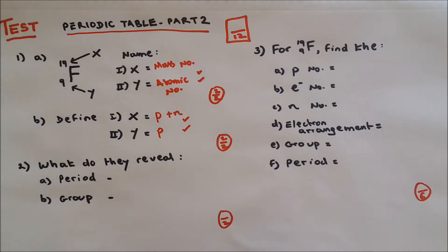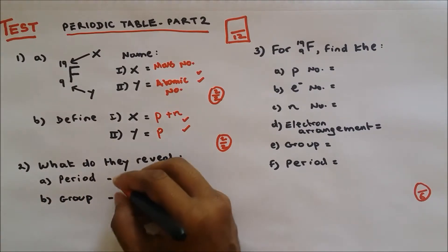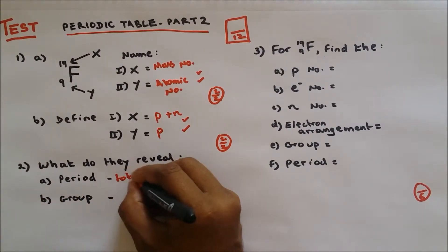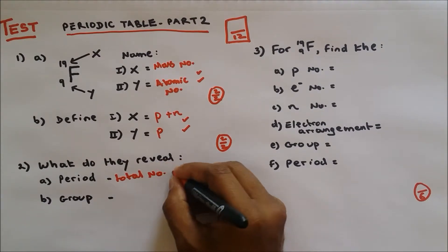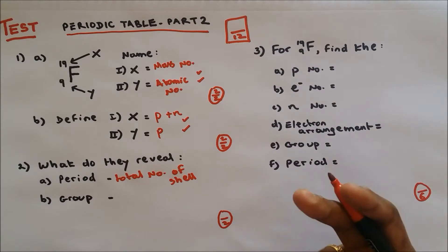Question number two part a. What do they reveal? The period in the periodic table, what do they tell us? They tell us the total number of shells. So if there are three shells, then the period is three.